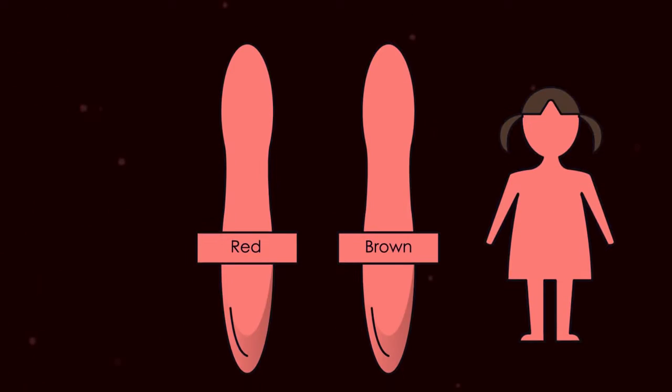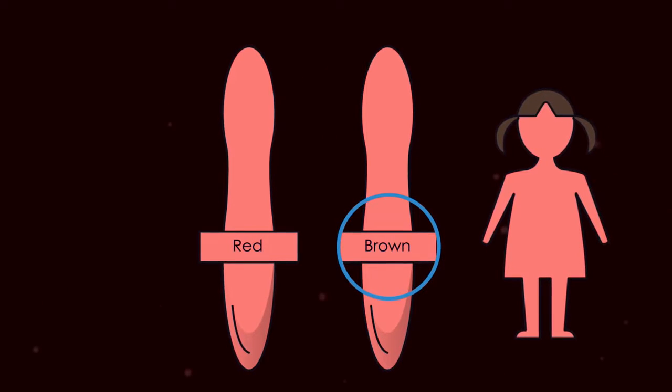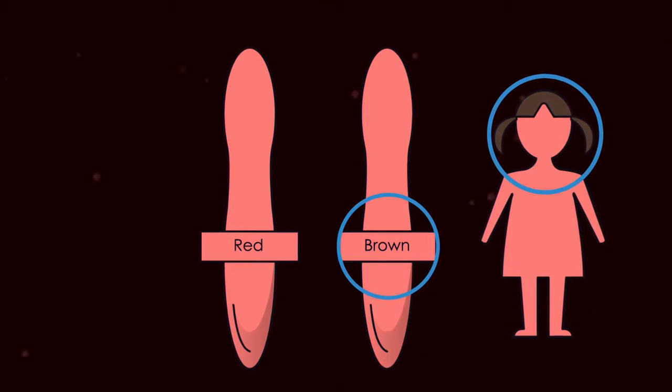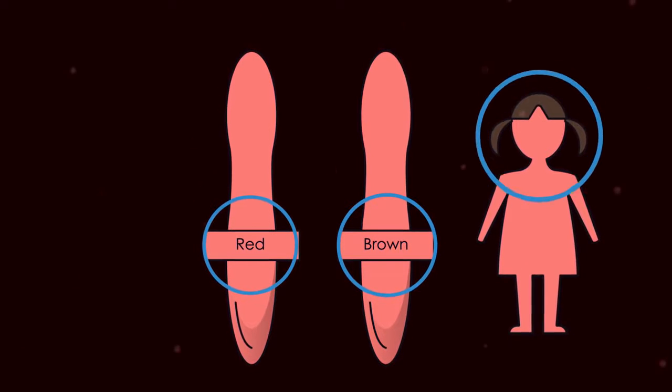When two different alleles are present, so are heterozygous, one allele will be dominant. This allele will influence the phenotype. So brown hair is dominant over red hair, so the offspring is more likely to have brown hair.